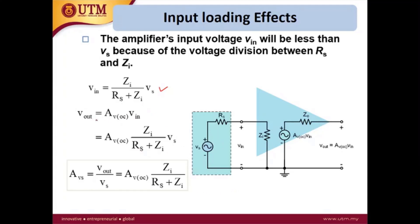Vout is equal to Avoc·Vin because there is no voltage drop at Zout. Using the voltage divider equation, Vin equals (Zi / (Rs + Zi)) · Vs.